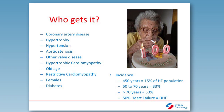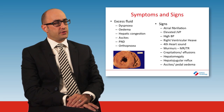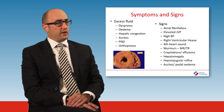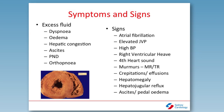Diastolic heart failure tends to occur in elderly females, particularly those who are diabetic with a history of hypertension. It can also occur in patients with hypertrophic cardiomyopathy or aortic stenosis. The other common group it occurs in is those with coronary artery disease where it can co-exist with systolic heart failure. Often these patients will have co-existent atrial fibrillation and an elevated jugular venous pressure, with or without pulmonary hypertension, a right ventricular heave, and a loud P2. They will often have bilateral crepitations or pleural effusions and signs of right heart failure such as hepatomegaly or ascites.